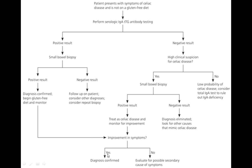If there is improvement, your diagnosis is confirmed. If there's a negative biopsy result, still follow up the patient but consider other diagnoses and possibly repeating the biopsy. If the IgA antibody test is negative, you may still choose to proceed to a small bowel biopsy if there's high clinical suspicion. If the biopsy is positive, treat as celiac disease and monitor for improvement. If negative, look for other causes in the differential diagnosis.